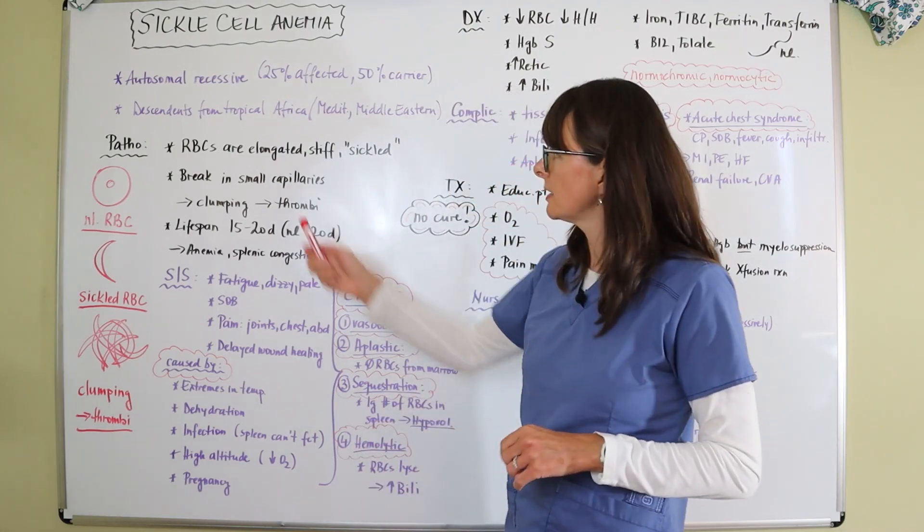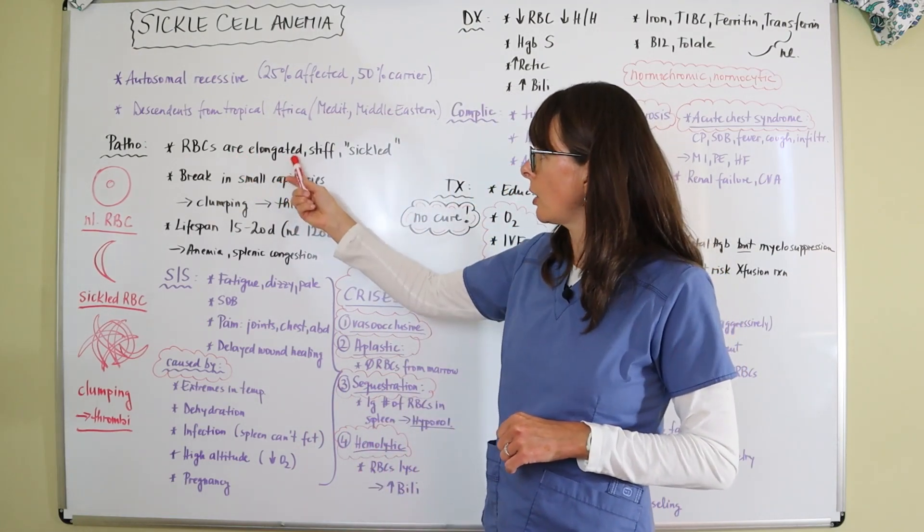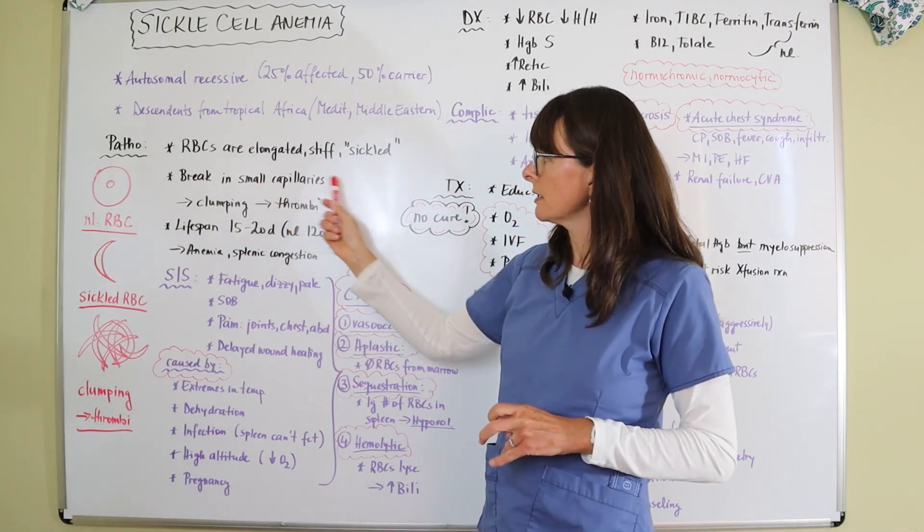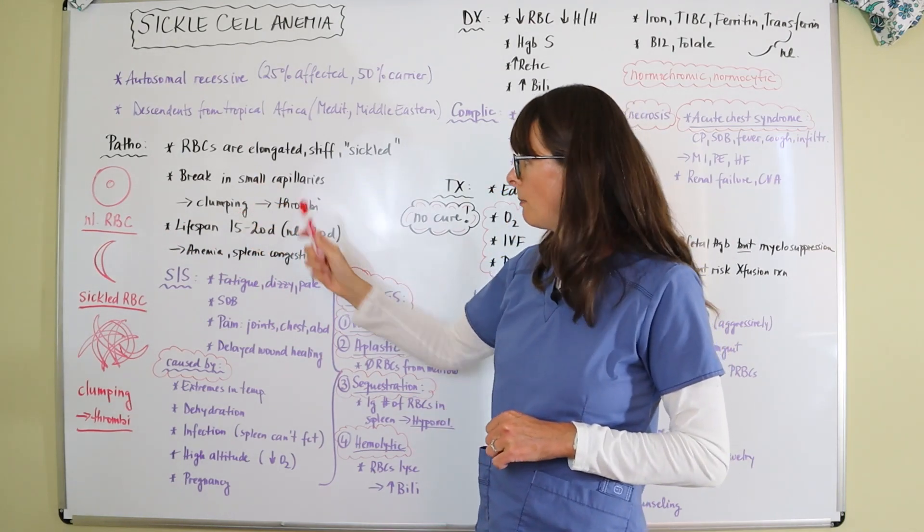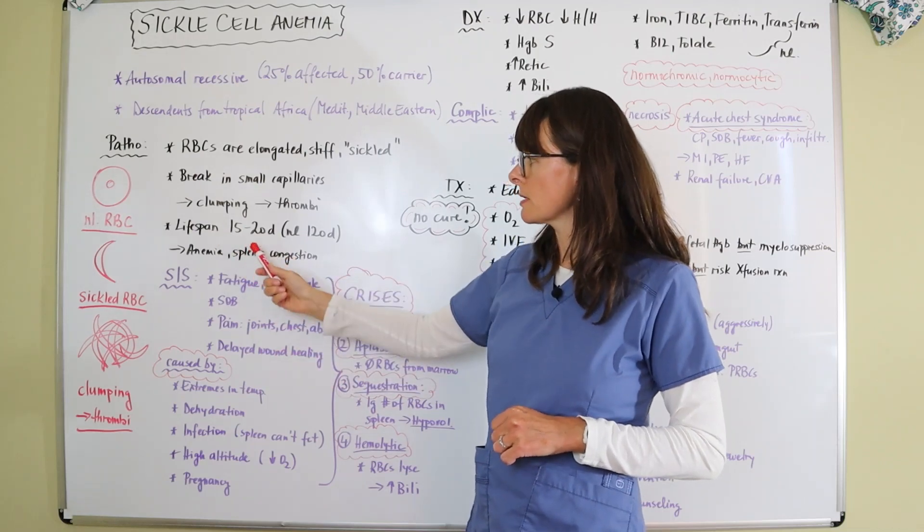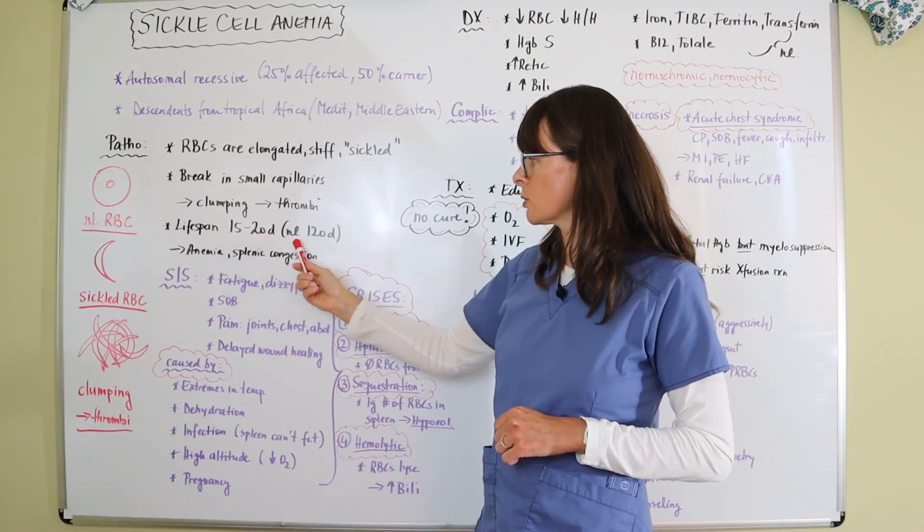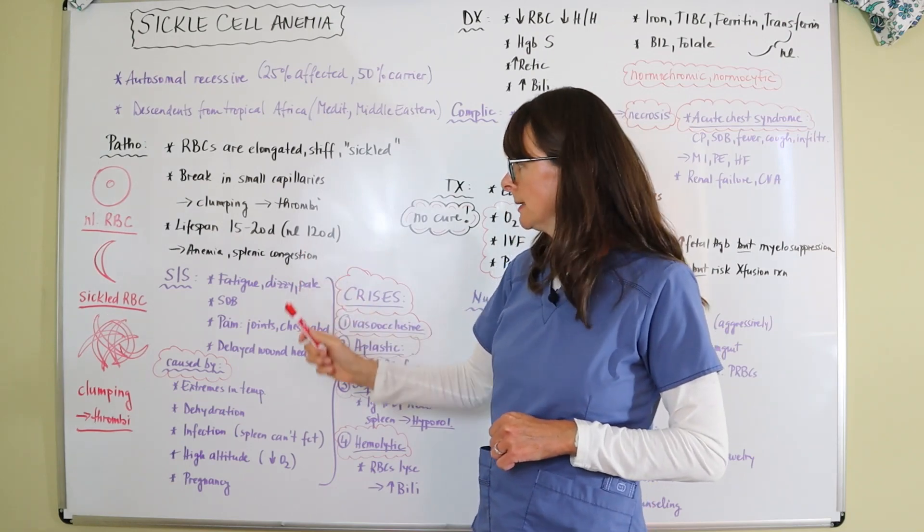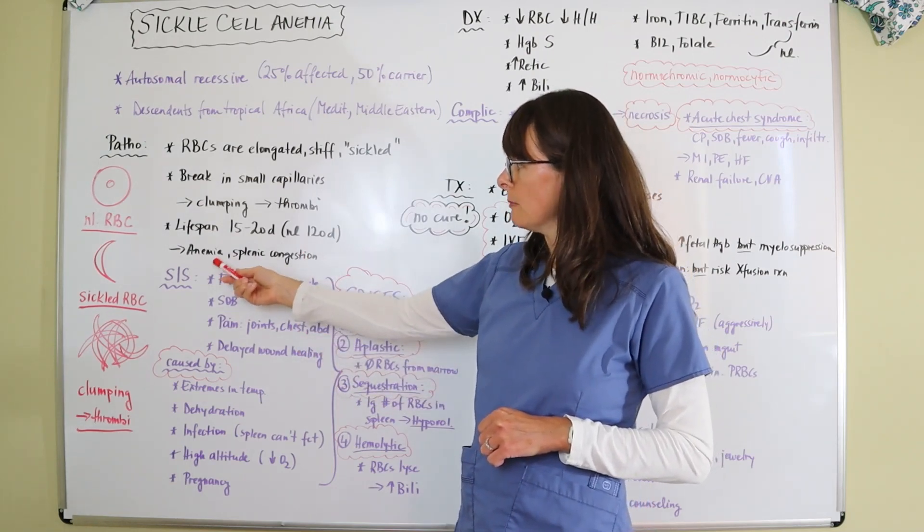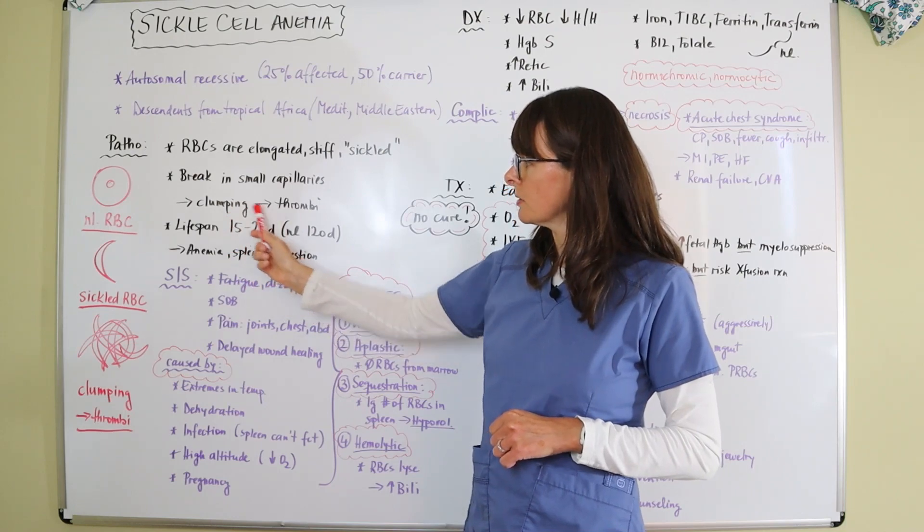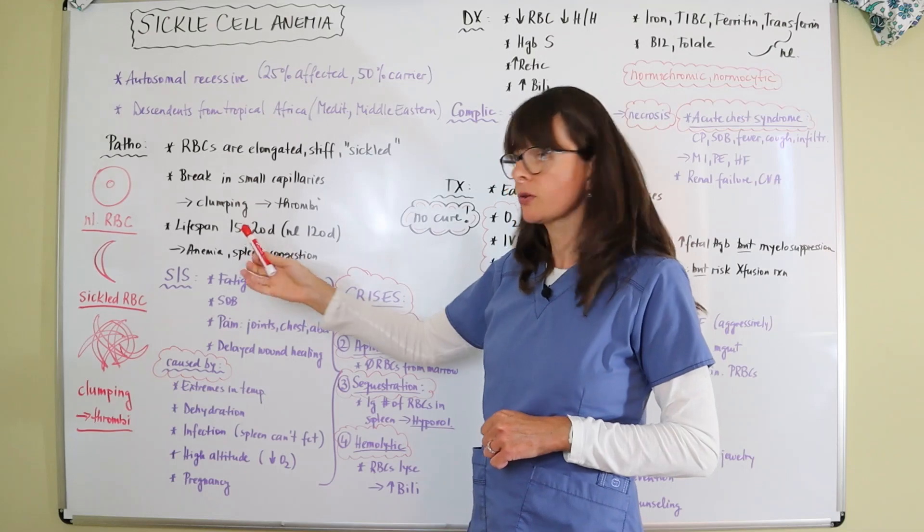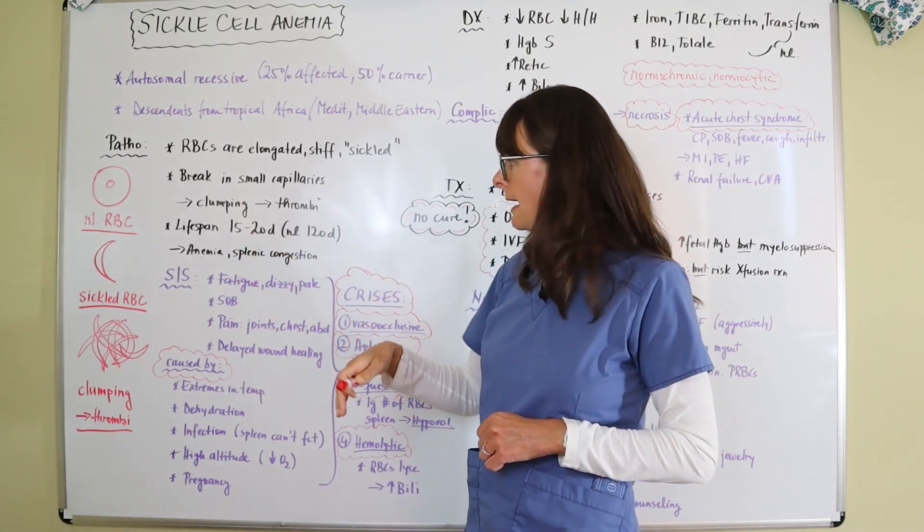These sickled red blood cells are elongated and stiff and have this sickled appearance. They break in the small capillaries and then cause clumping and thrombi. Their lifespan is only 15 to 20 days where a normal red blood cell has a lifespan of about 120 days. This then leads to anemia because these sickled cells have a much shorter duration than normal blood cells, and therefore the blood cell count will be down.